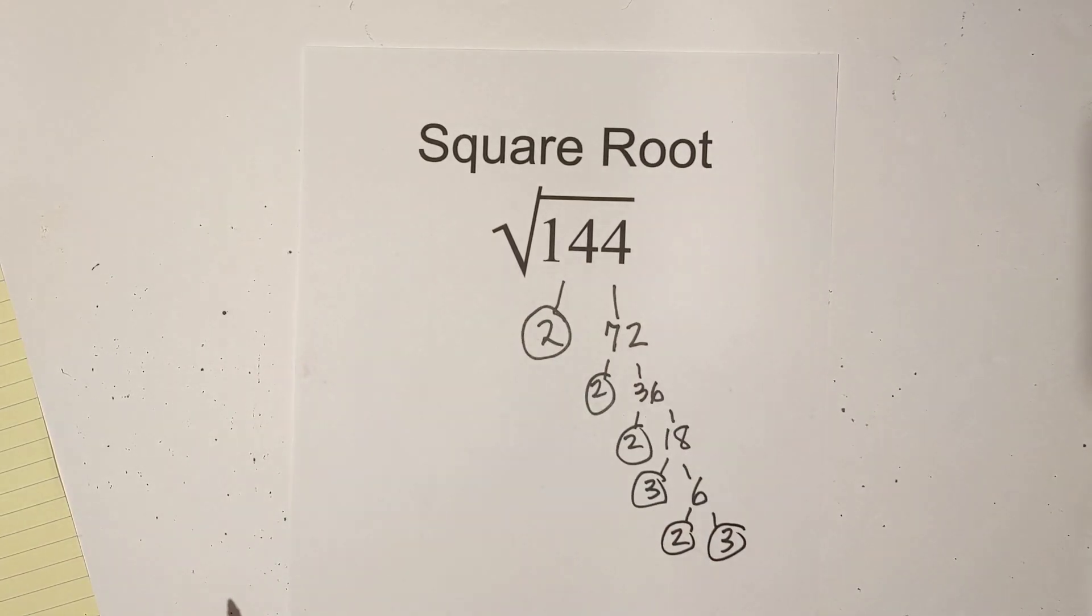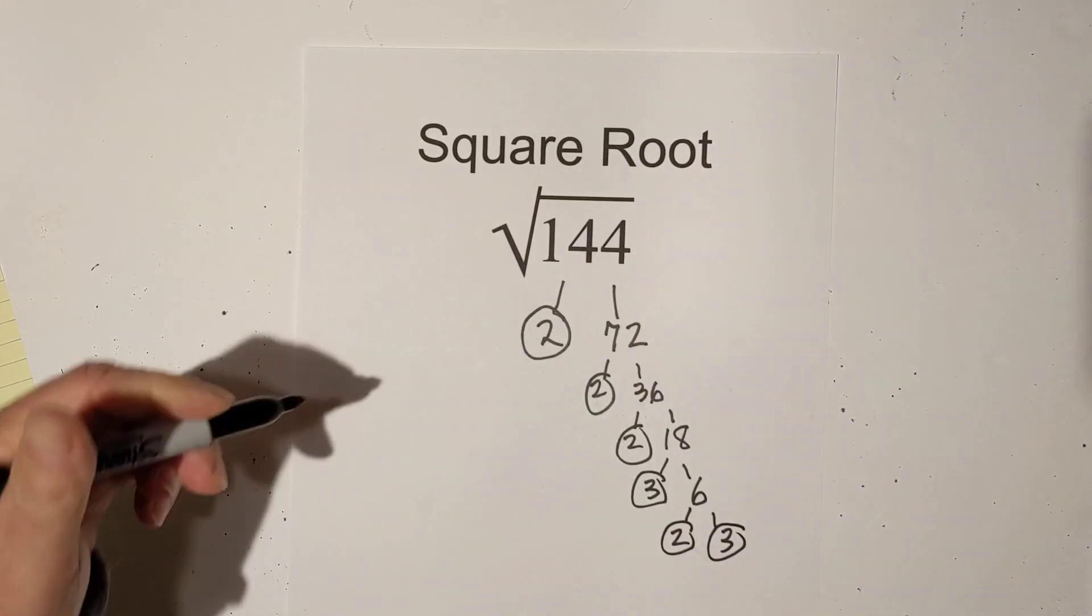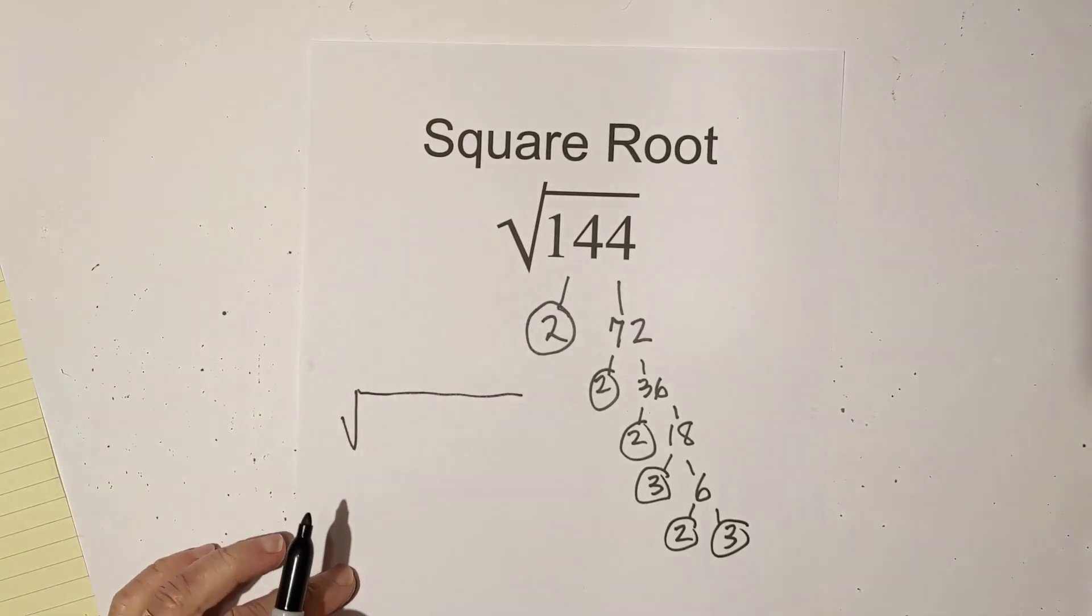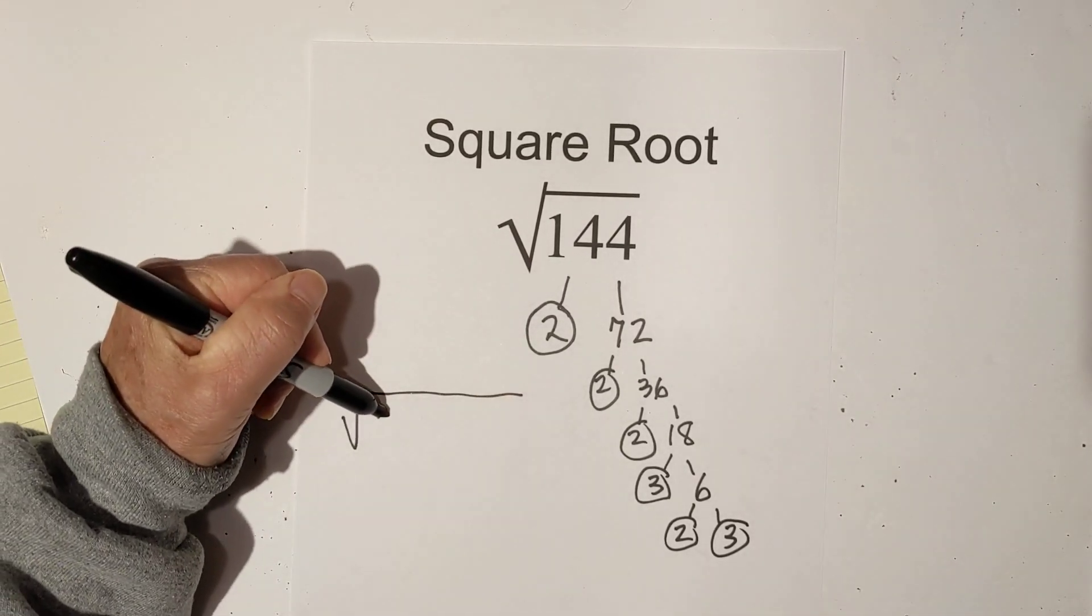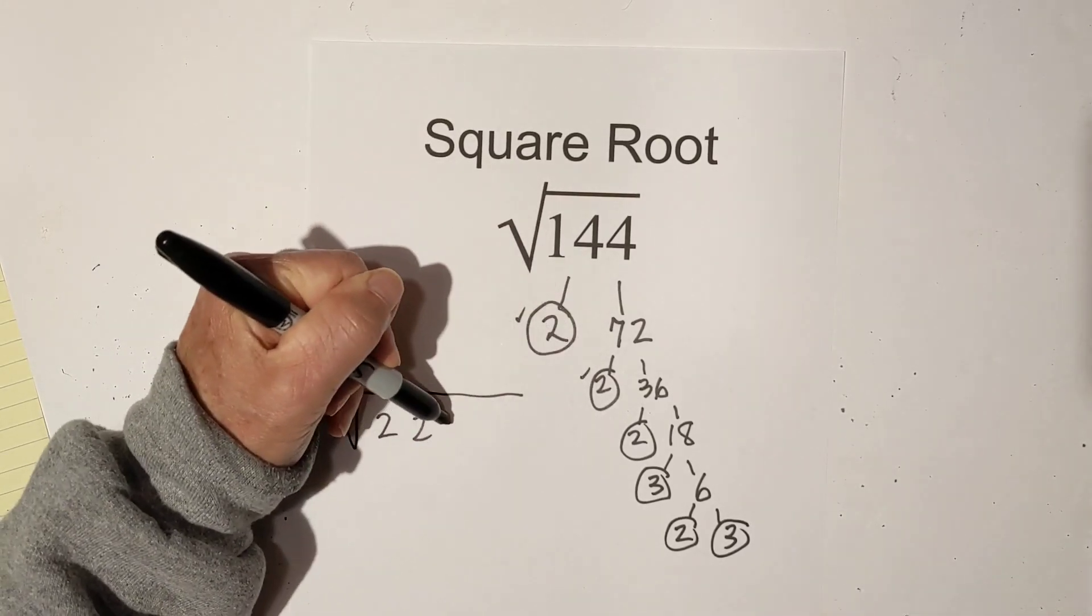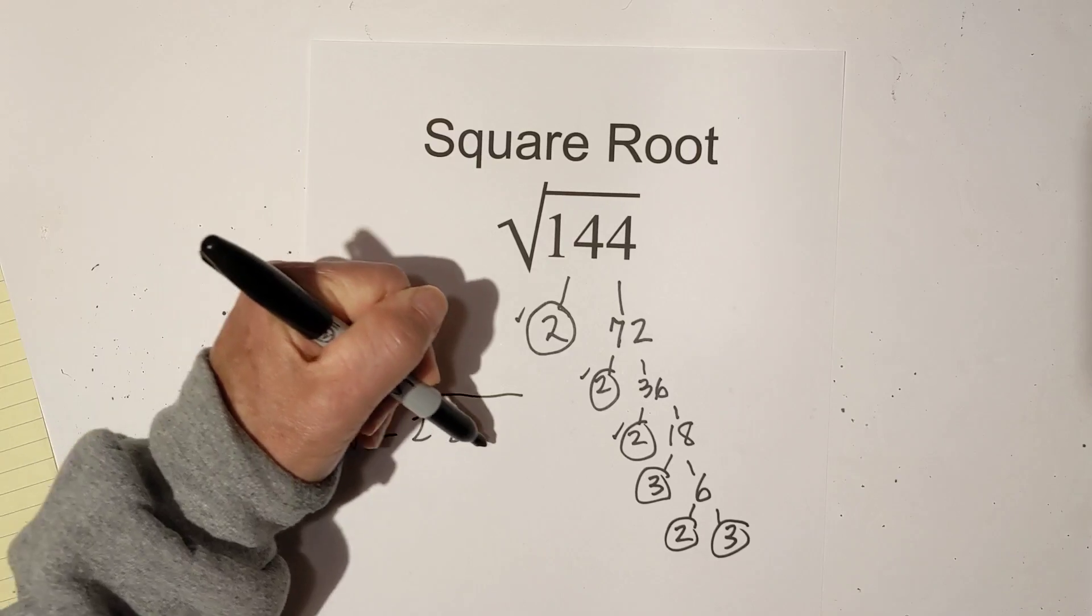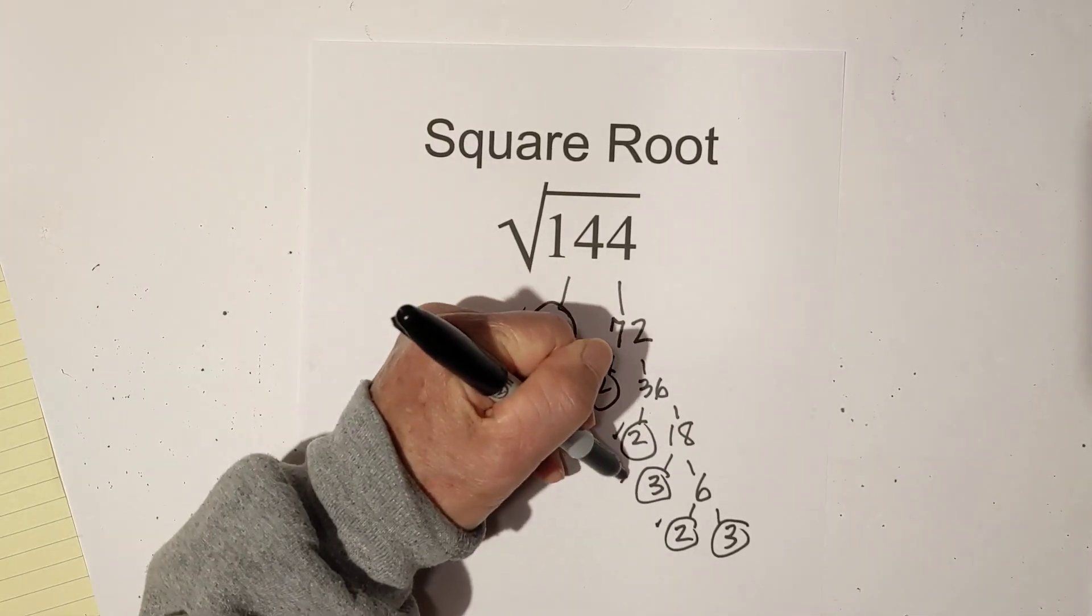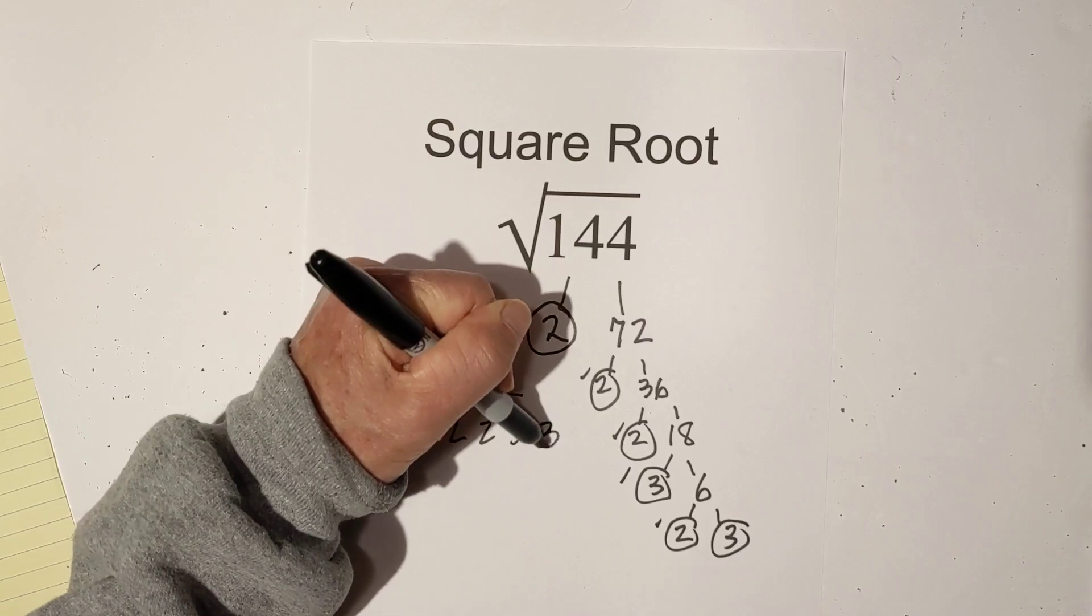So at this point, I have all my prime numbers. So I can go ahead and place them back under the square root symbol. And so we've got a 2. I'm going to check it because you can make a mistake here. A 2. Okay. Another 2 down here. I'm just going to write it because it'll make it a little bit easier. And then 2 threes. Okay.